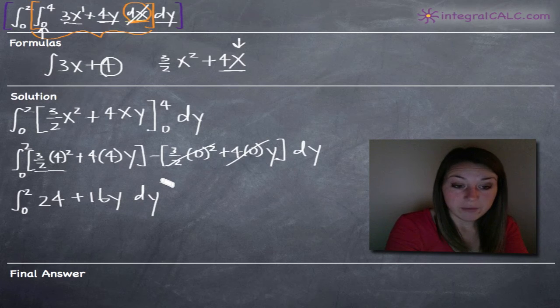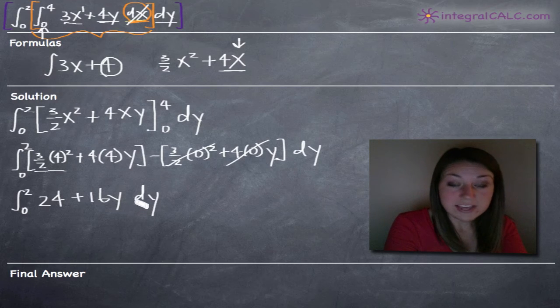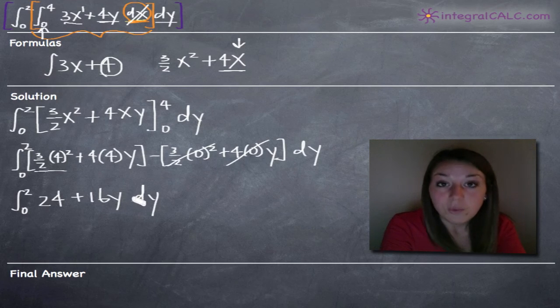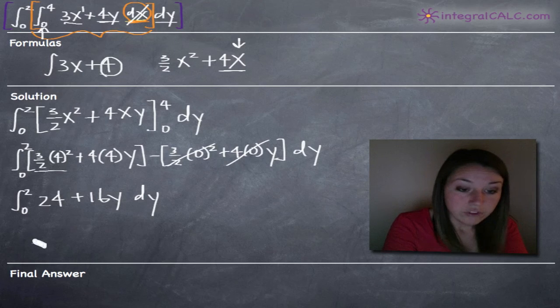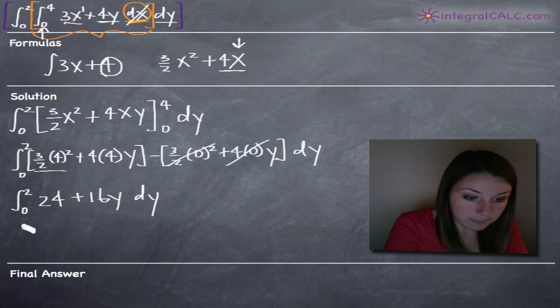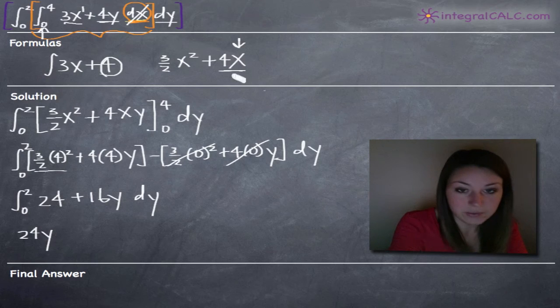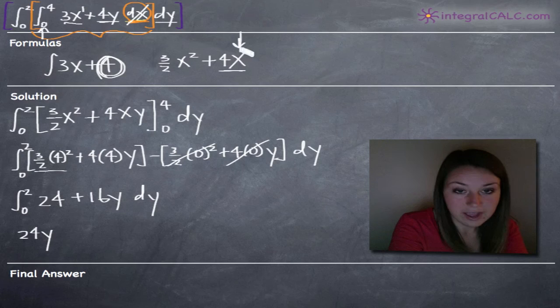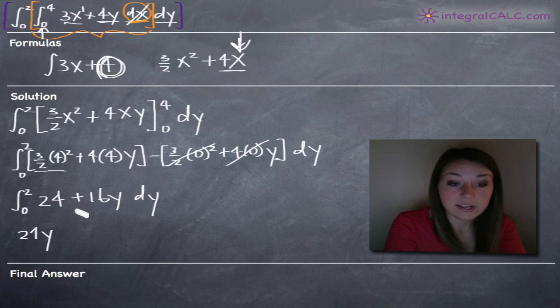Now that we've fully simplified this, we can proceed to taking the integral with respect to y. So doing that, of course, will give us 24y. Just like we said up here when we've got the constant inside, we just add the variable. Well, now with respect to y, we're just going to add the y variable to the constant 24.